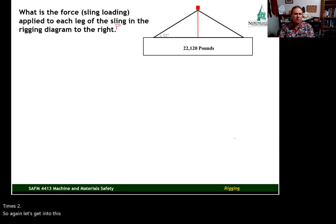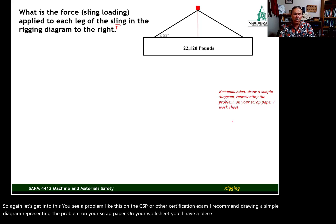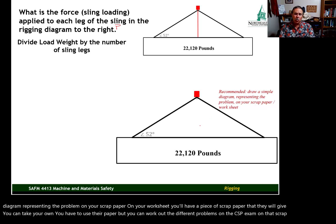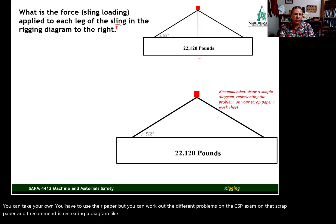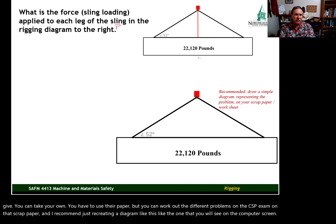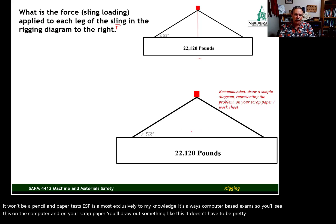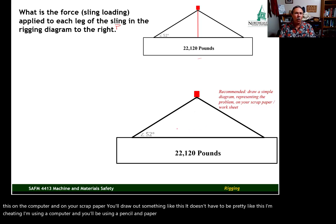You see a problem like this on the CSP or other certification exam, I recommend drawing a simple diagram representing the problem on your scrap paper on your worksheet. You'll have a piece of scrap paper that they will give you. You can't take your own. You have to use their paper, but you can work out the different problems on the CSP exam on that scrap paper. And I recommend just recreating a diagram like this, like the one that you will see on the computer screen. It won't be a pencil and paper test. CSP is almost exclusively, to my knowledge, it's always a computer-based exam. So, you'll see this on the computer, and on your scrap paper, you'll draw out something like this. It doesn't have to be pretty like this. I'm cheating, I'm using a computer, and you'll be using a pencil and paper. It doesn't have to be pretty, as long as it helps you keep track of your calculations and the different variables.